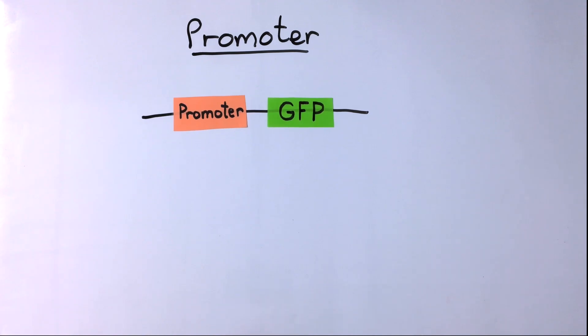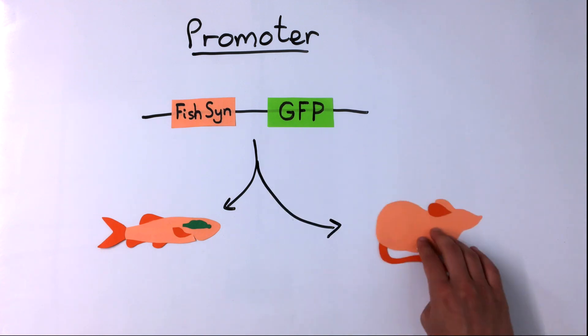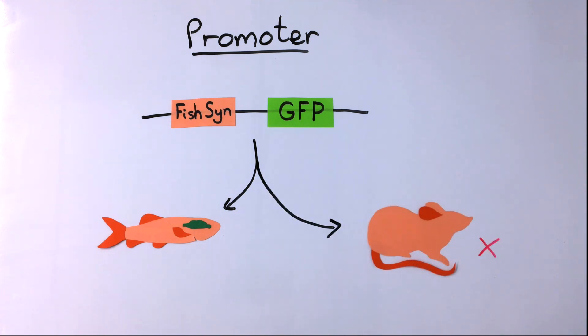Promoters are specific to organisms and sometimes even tissue types. Using a fish synapsin promoter, for example, will result in expression specific to neurons in fish. Using the same promoter in a mouse, however, will result in no expression.